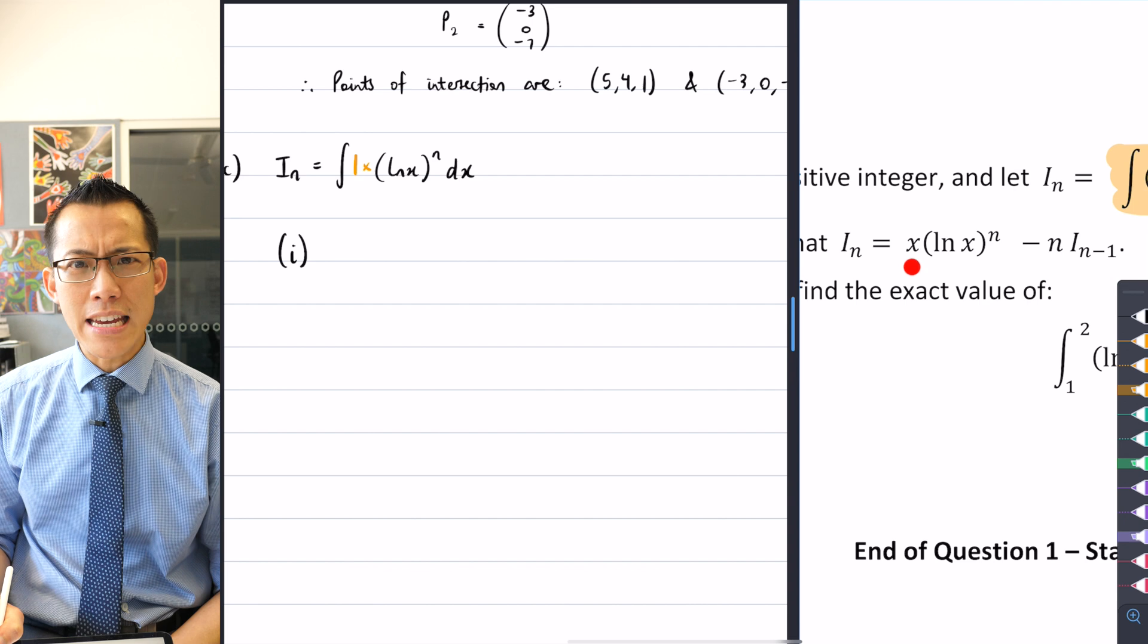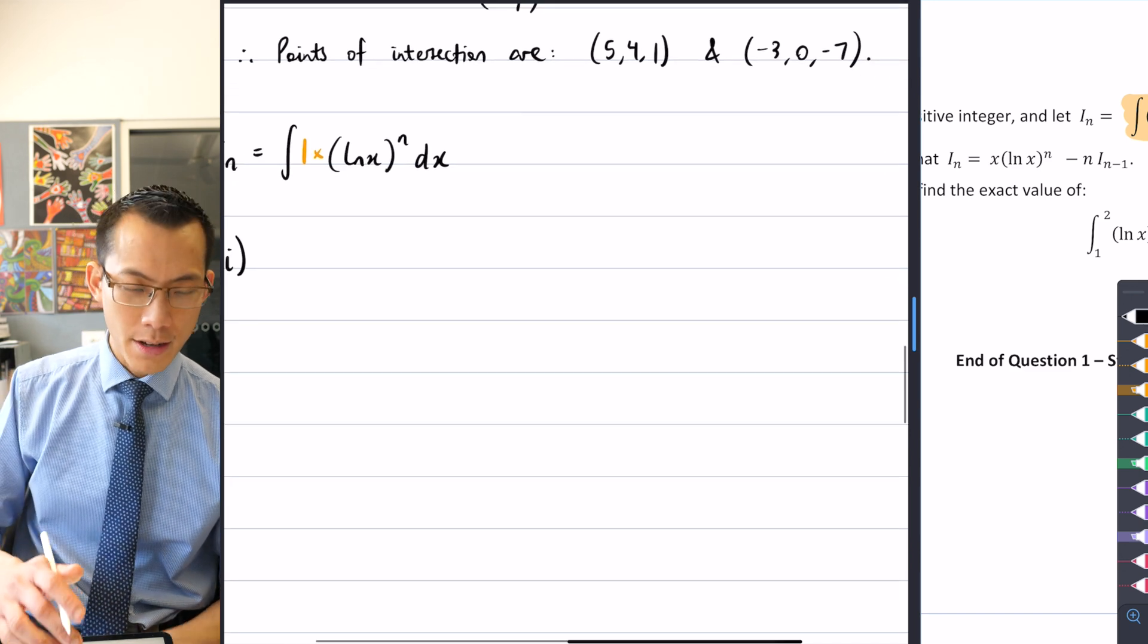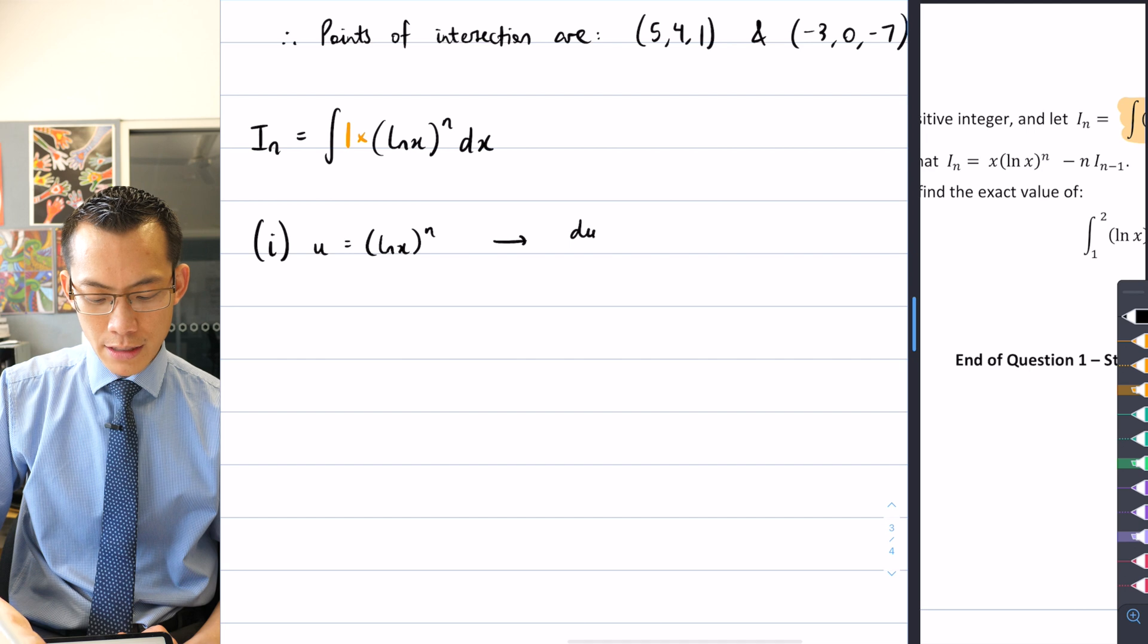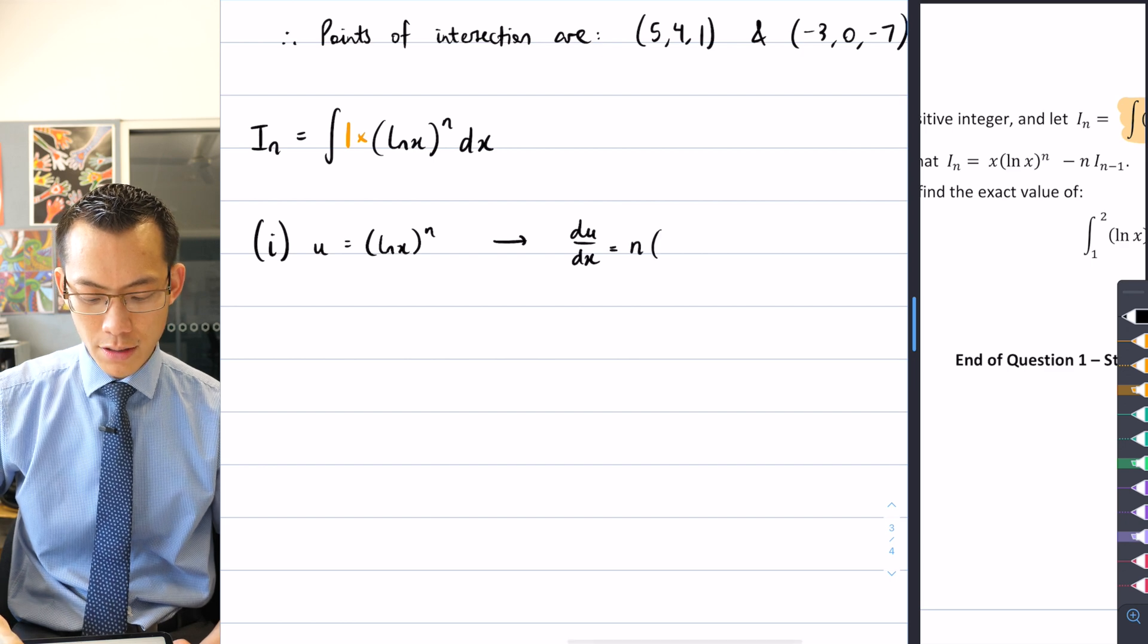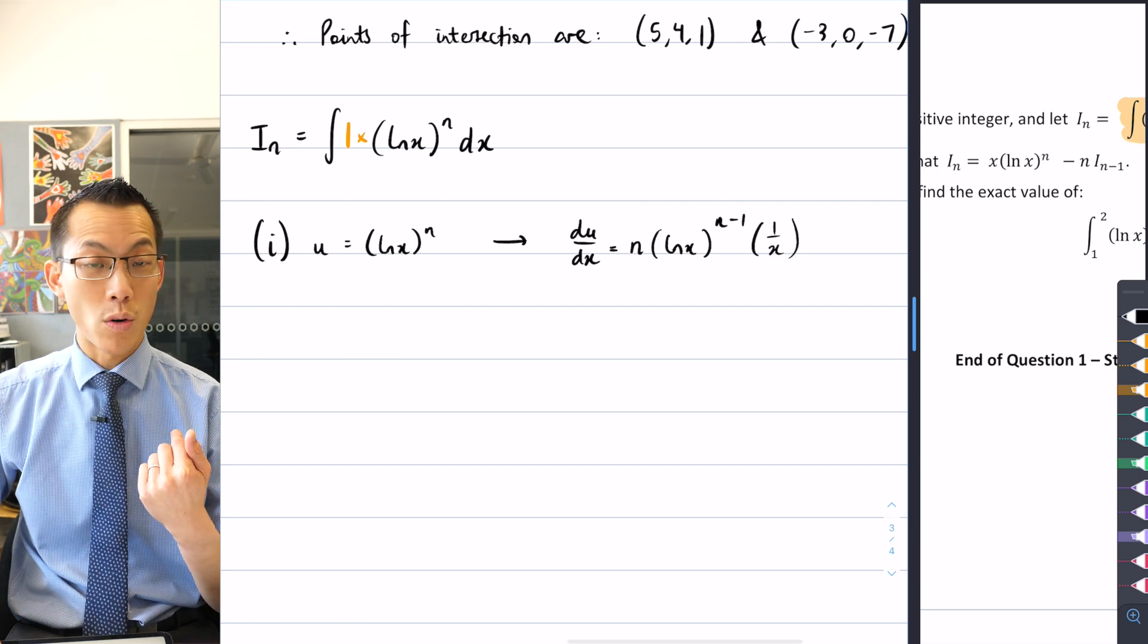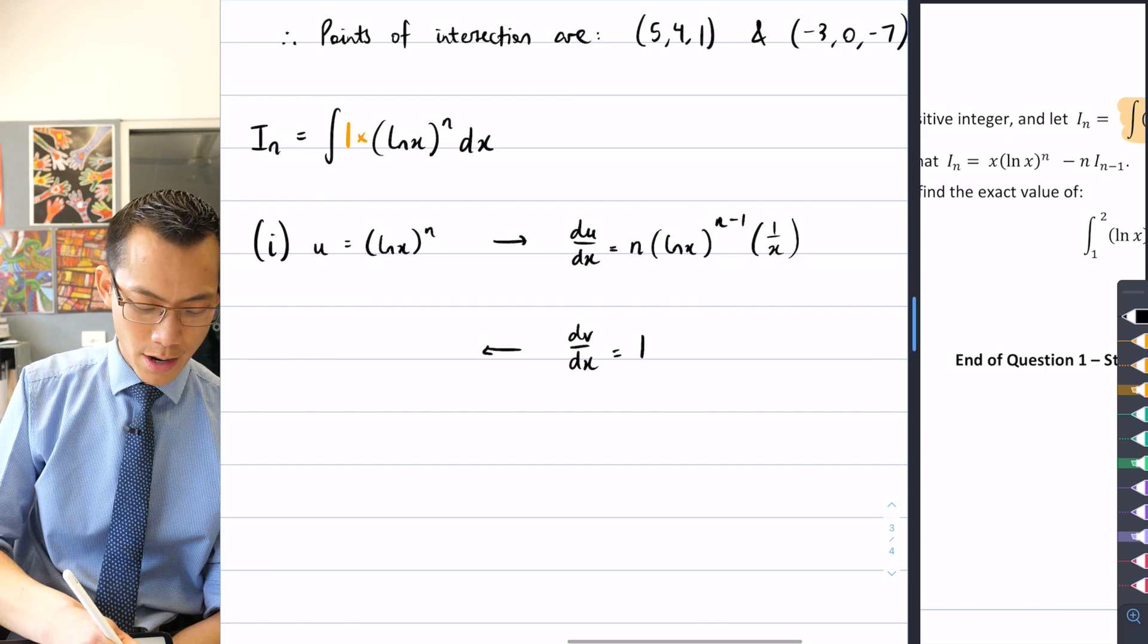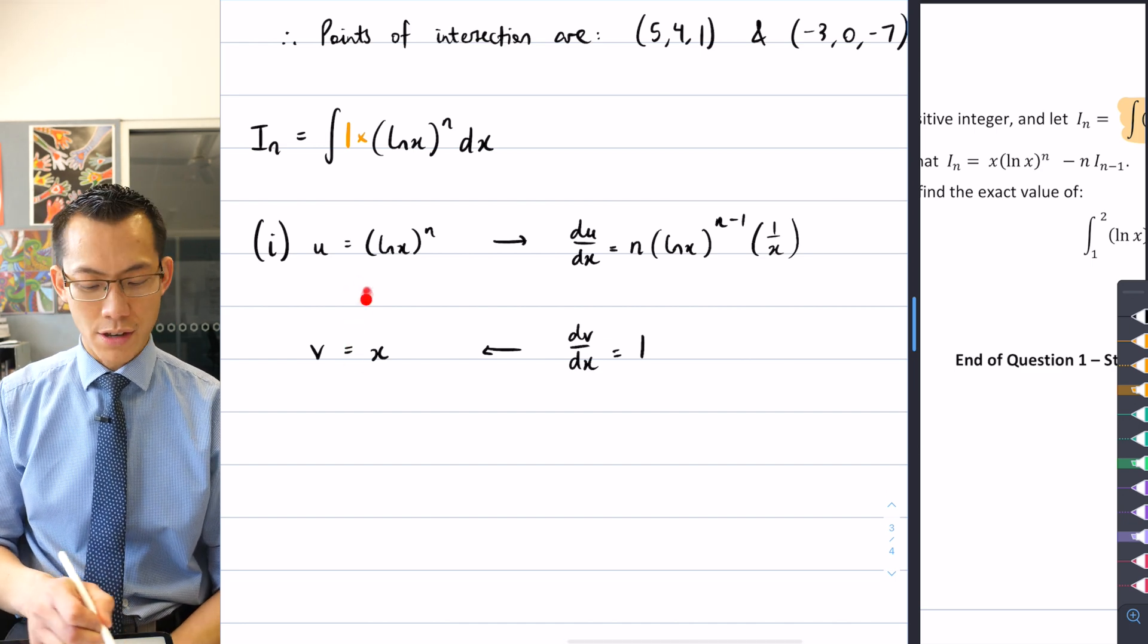Because if I then say there's a 1, let's just sneak this in here, there's a 1 hanging in there. If I make that the dv, then it's very easy to integrate and it will introduce the x term that you can see right here. This is going to be the v du that you can see. This x will be the v.